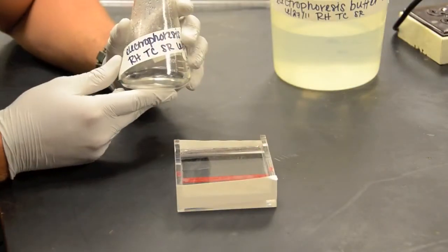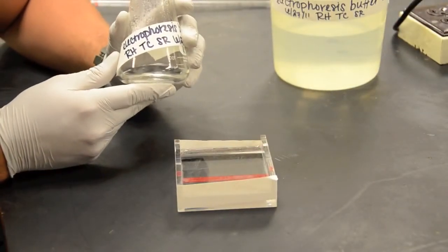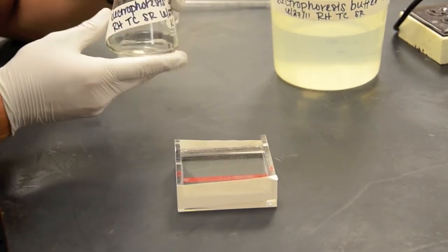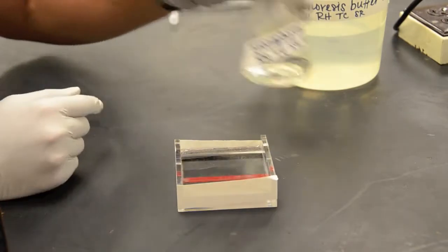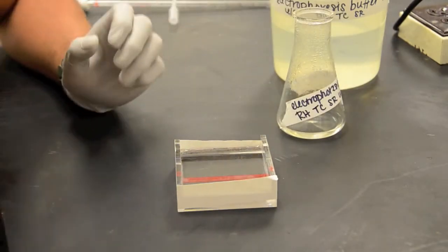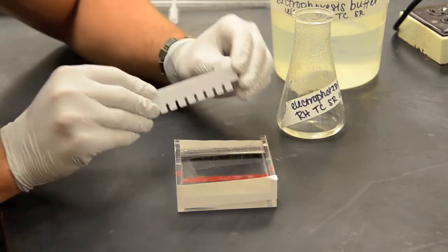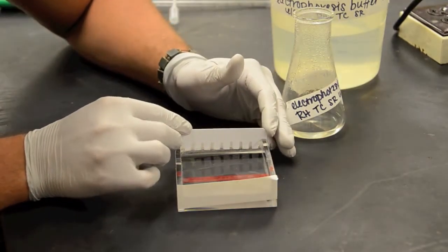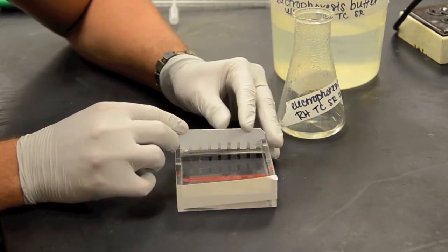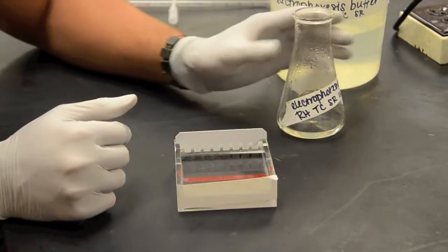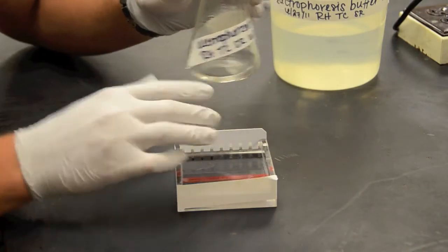Okay, once the agarose gel is done warming in the microwave we're going to let it sit out until it's cold enough for us to handle. Now we've got our comb here. What we're going to do with this comb is load it where the black band appears and what this is going to do is help create our loading wells for our dye whenever we add the agarose gel.